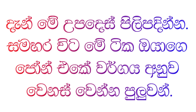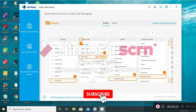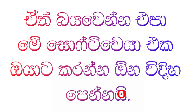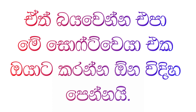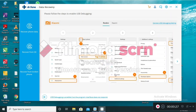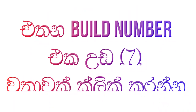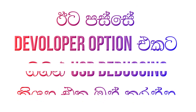Now follow these instructions. Sometimes these steps may change due to your phone type, but do not worry because the software shows the path for you. Go to settings on your mobile phone and go to About Phone. Click on the build number 7 times. Then go to Developer Options and turn on USB debugging.